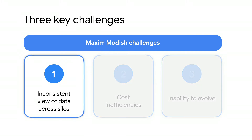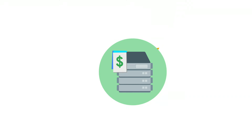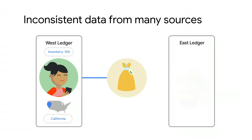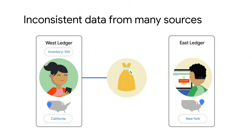This was a tough problem to solve. They were dealing with an extremely large amount of data, requiring them to integrate event data from hundreds of siloed data sources in a timely manner. These inventory events were coming in rapidly and constantly changing, resulting in a lack of real-time consistency across data sources. For example, a women's dress would show in stock on the mobile shopping app, but the same dress showed out of stock in the physical store.